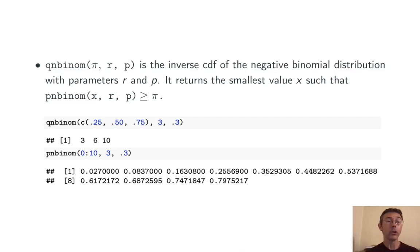So here we see qnbinom of 0.25, 0.5, and 0.75 in a negative binomial distribution with parameters r equals 3 and p equals 0.3. And we got back 3, 6, 10.